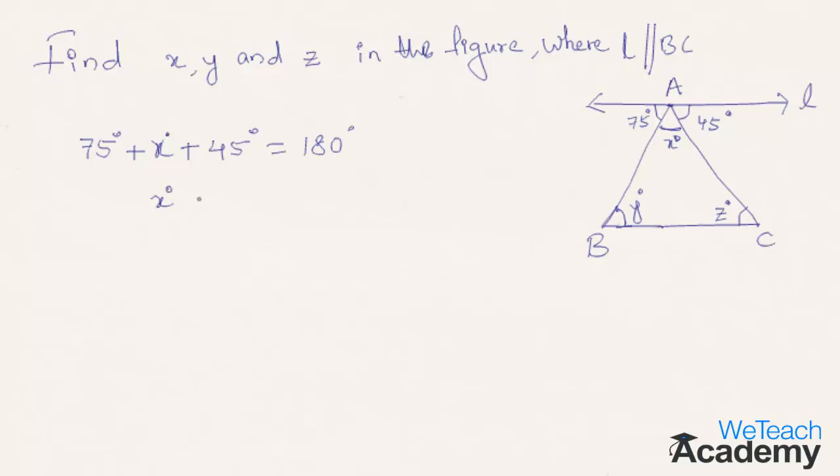By solving this equation, we get x plus 120 equals 180 degrees. Writing 120 degrees on the right-hand side, it becomes x equals 180 minus 120 degrees, which equals 60 degrees.